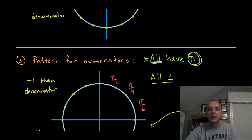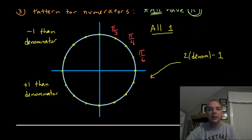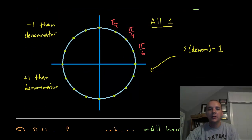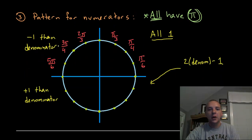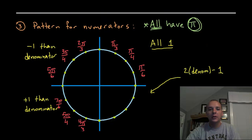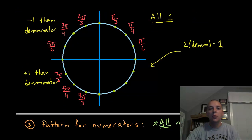In the second quadrant, notice how the numerator numbers are one less than the denominator. So it's 5 pi over 6, 3 pi over 4, and 2 pi over 3. Just remember that pattern: one less than whatever the denominator number is. In the third quadrant the numerator is one more than the denominator: 7 pi over 6, 5 pi over 4, 4 pi over 3.